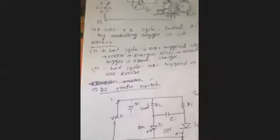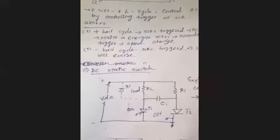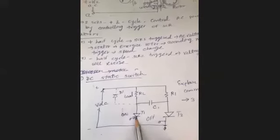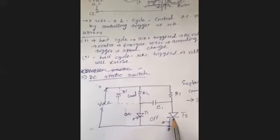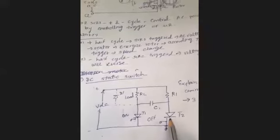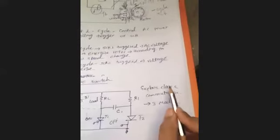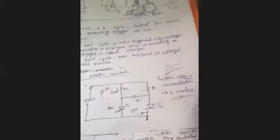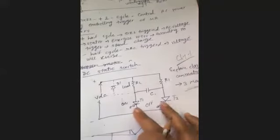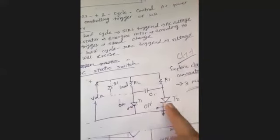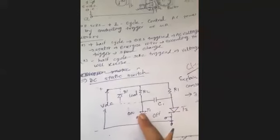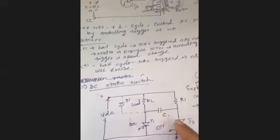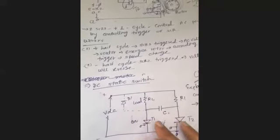The next type is the static switch. It uses a capacitor and two SCRs — T1 and T2 — operating in alternate modes. This uses class C commutation. There are three modes: at mode 0, the SCR is off; at mode 1, T1 is on; at mode 2, T2 is on; at mode 3, T1 is on again. The current direction determines which SCR conducts.